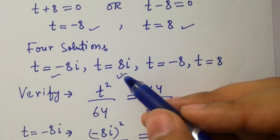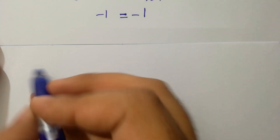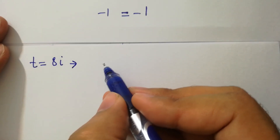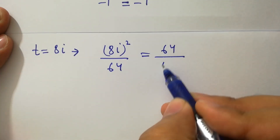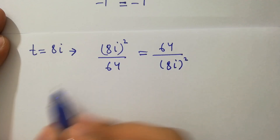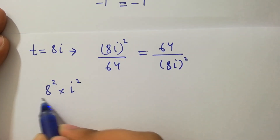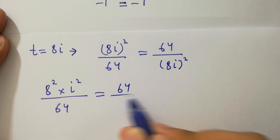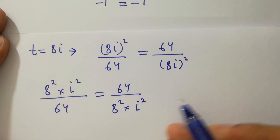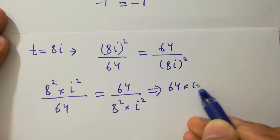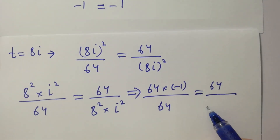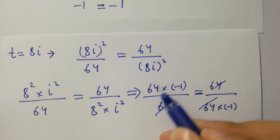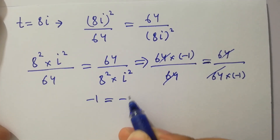Next, for t equal to 8i, we have t squared over 64 equal to 64 over t squared, giving 8i squared over 64 equal to 64 over 8i squared. Then 8 squared times i squared over 64, which is 64 times minus 1 over 64, equal to 64 over 64 times minus 1. The 64s cancel and we get minus 1 equal to minus 1.